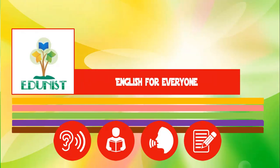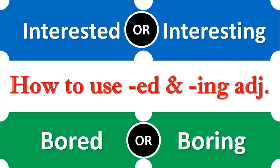Hello everyone, this is Asim from Adjanist and today I'm going to be teaching you how to use the adjectives ending in -ed and -ing. Here I have a few examples like 'entrusting' and 'entrusted.' Which one is correct to use in which situation? We need to see it thoroughly.